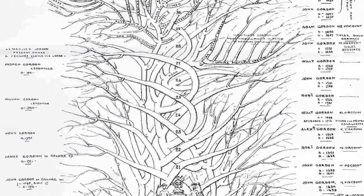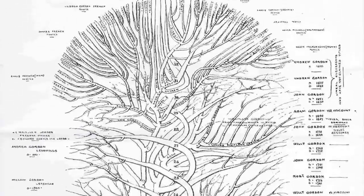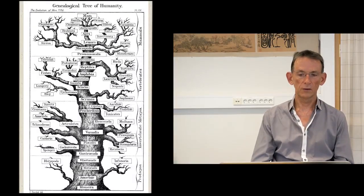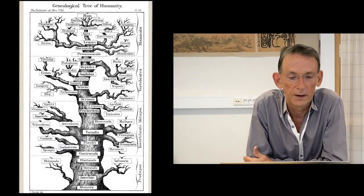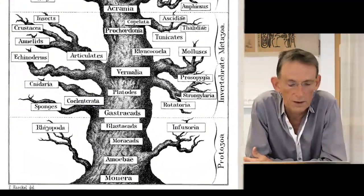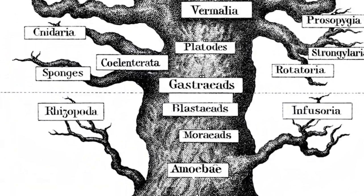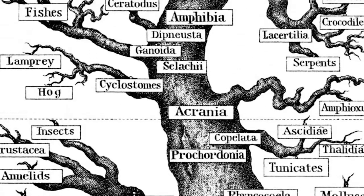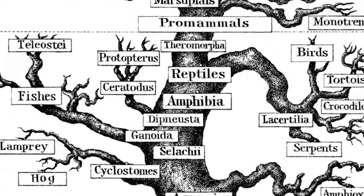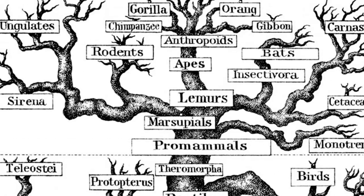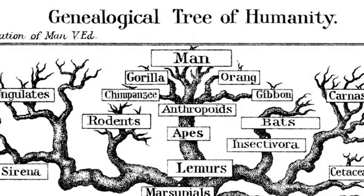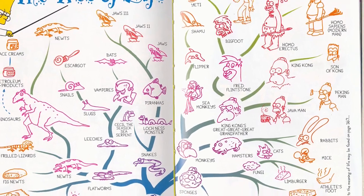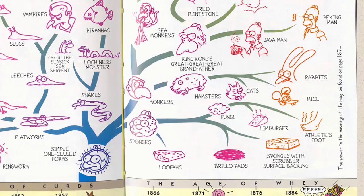Here's a typical genealogical tree of the 19th century. We then see humanity in Haeckel's famous diagram — humanity being part of a genealogical tree going from monera and amoeba at the bottom right up to gorillas and orangutans at the top, with man at the very top. Of course, this isn't the only representation of genealogical time. And this is Bart Simpson's version, which goes from simple one-cell life forms to Brillo pads, to athlete's foot and Limburger cheese.